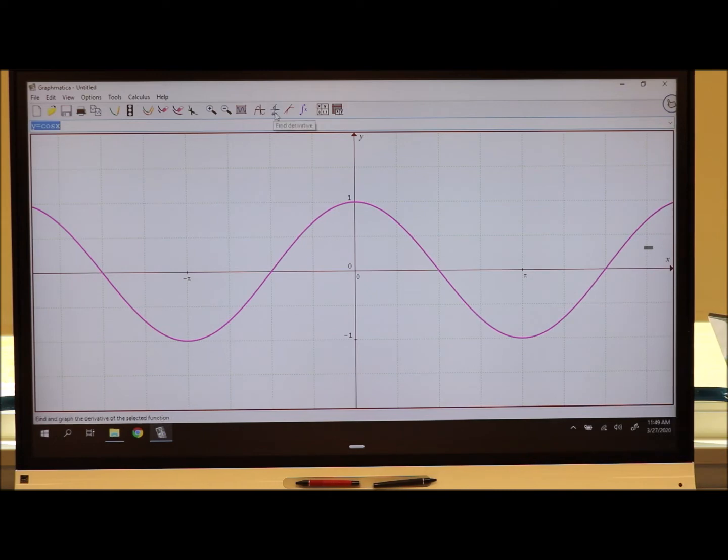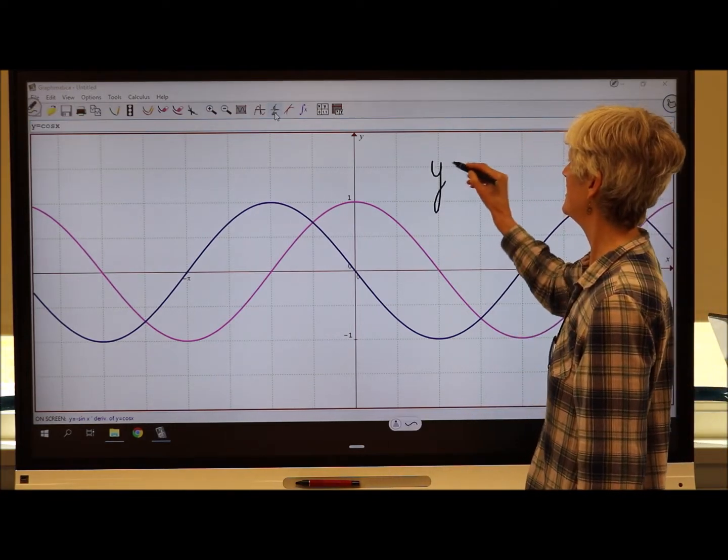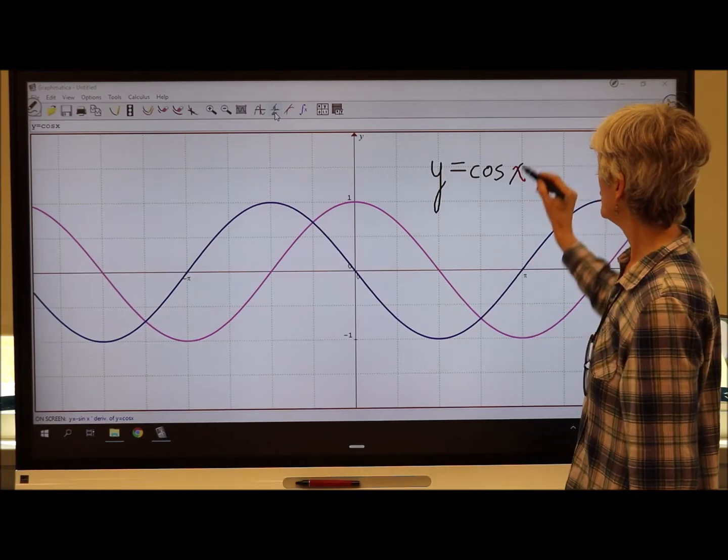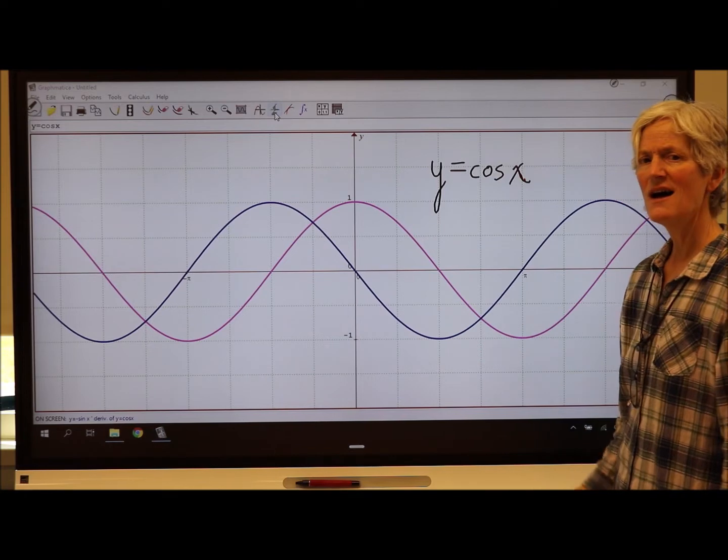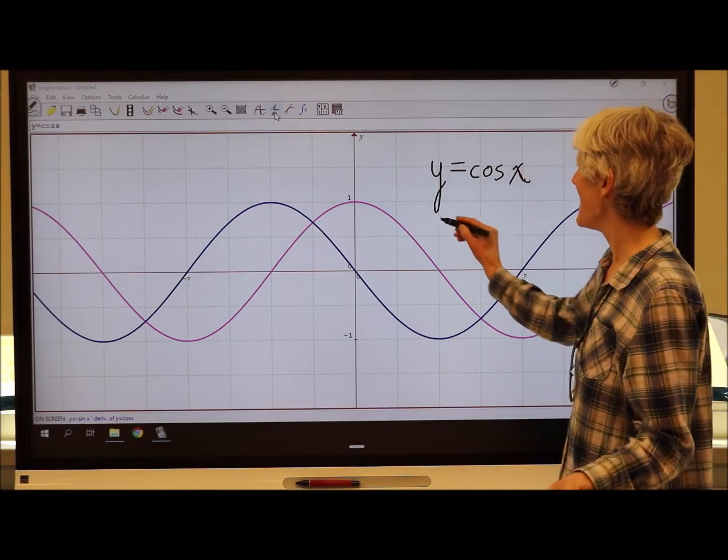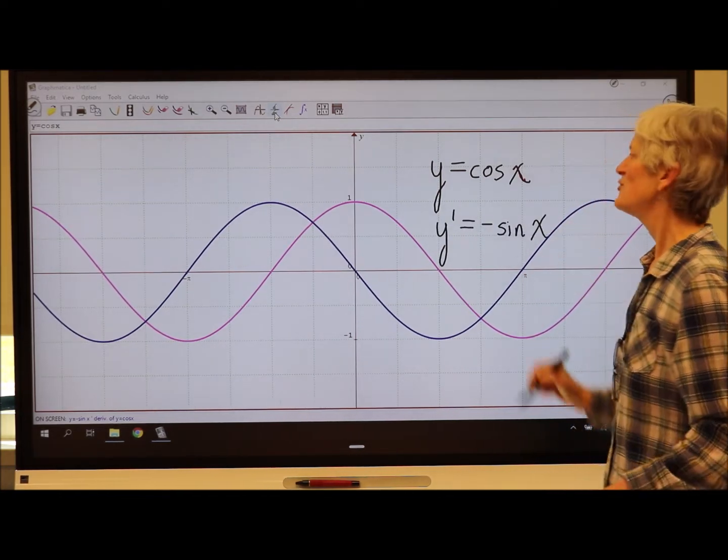Drum roll please. Boom. Okay. So there's our derivative. So my original function here is cosine of x. The blue here is my derivative. What do you think the derivative is? It's negative sine of x. Sure.